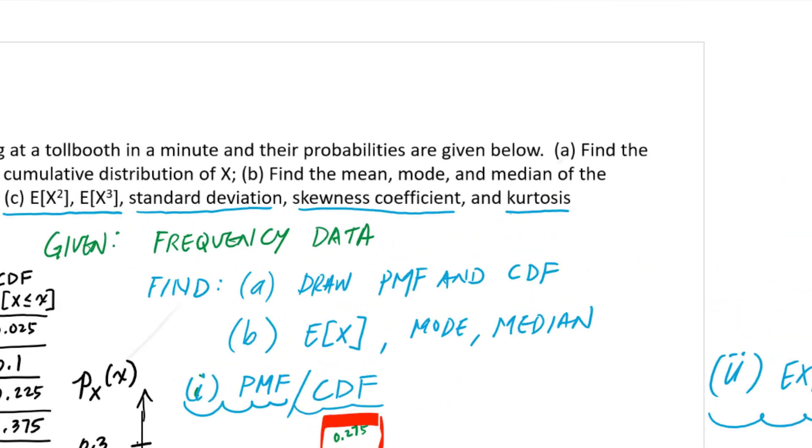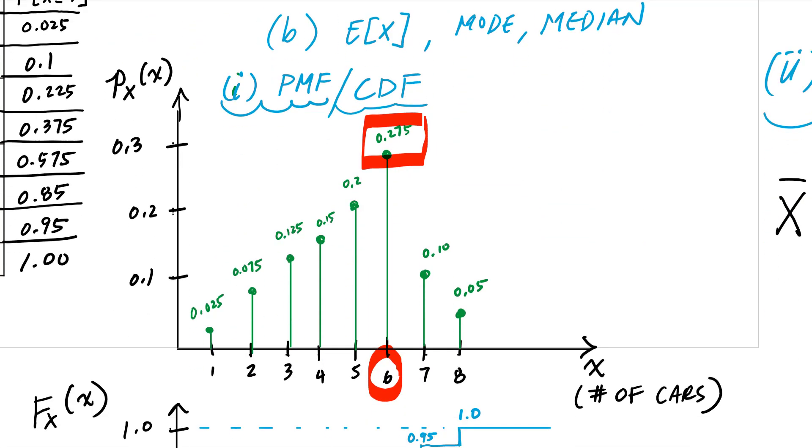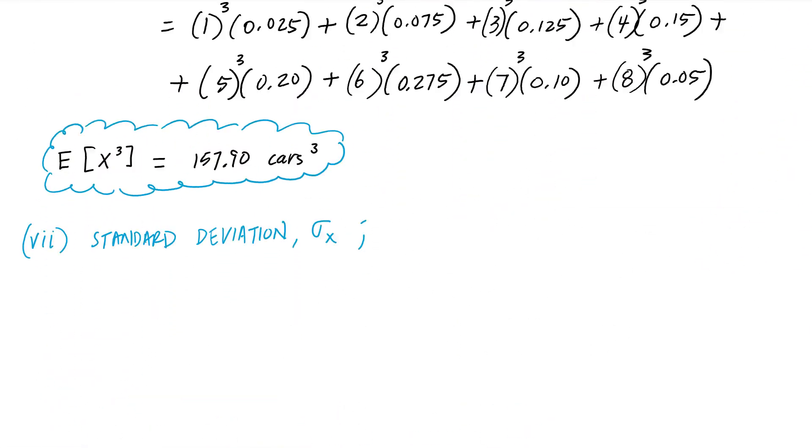And now what we want to do is look at measures of dispersion associated with this, in particular standard deviation, the skewness coefficient, and the kurtosis. And these are moments about the mean of the PDF.